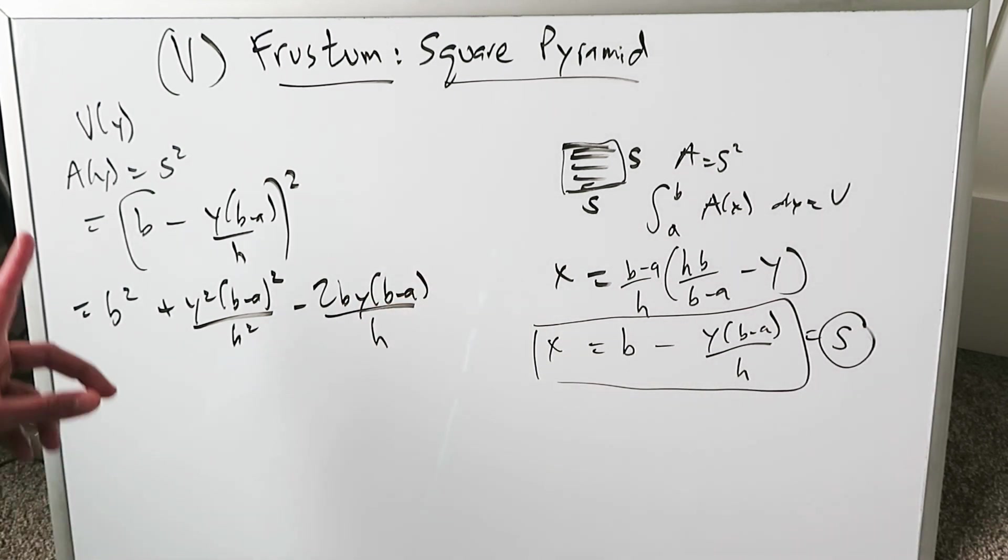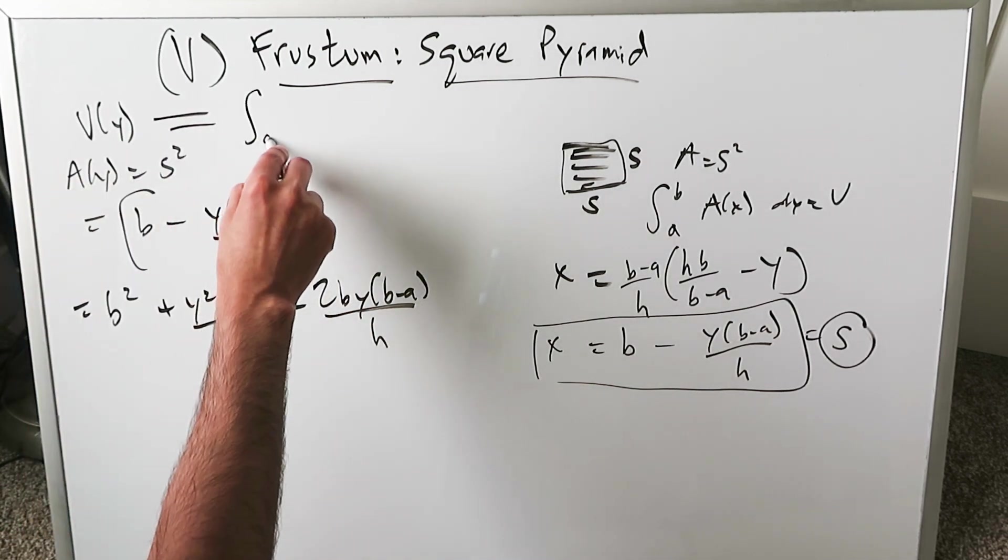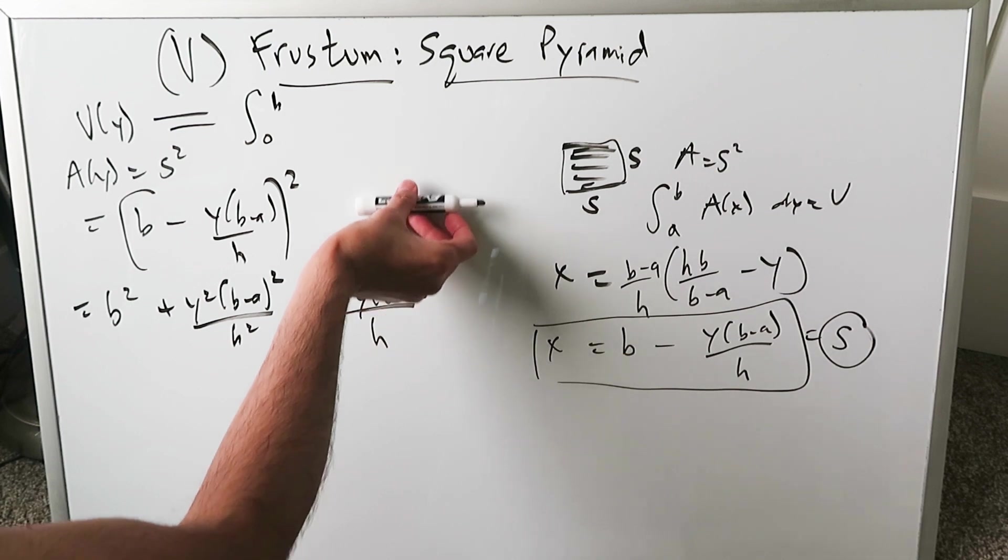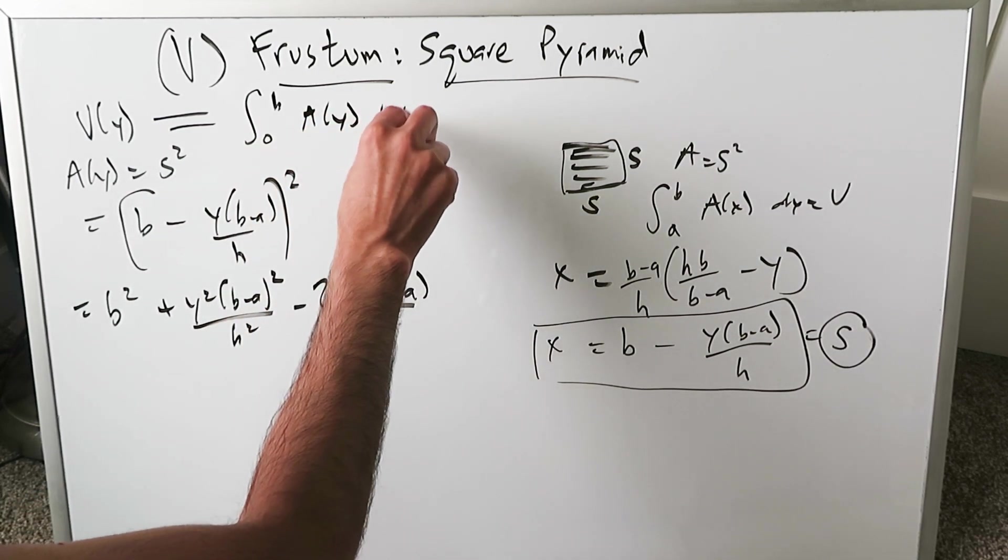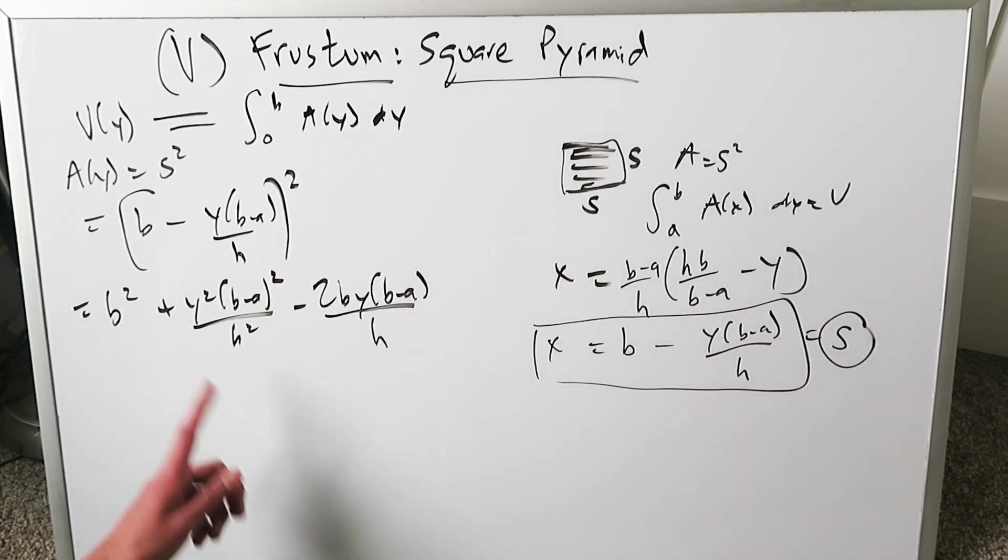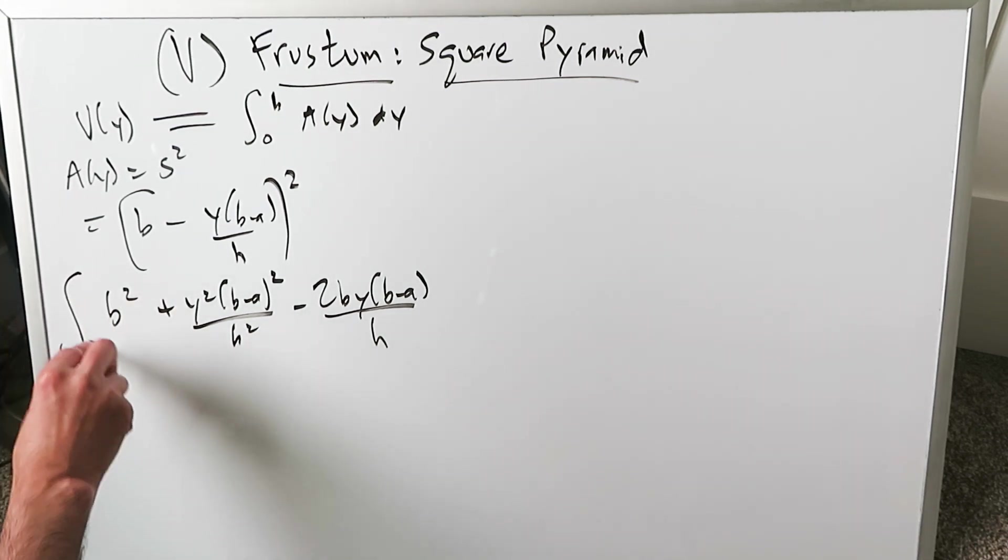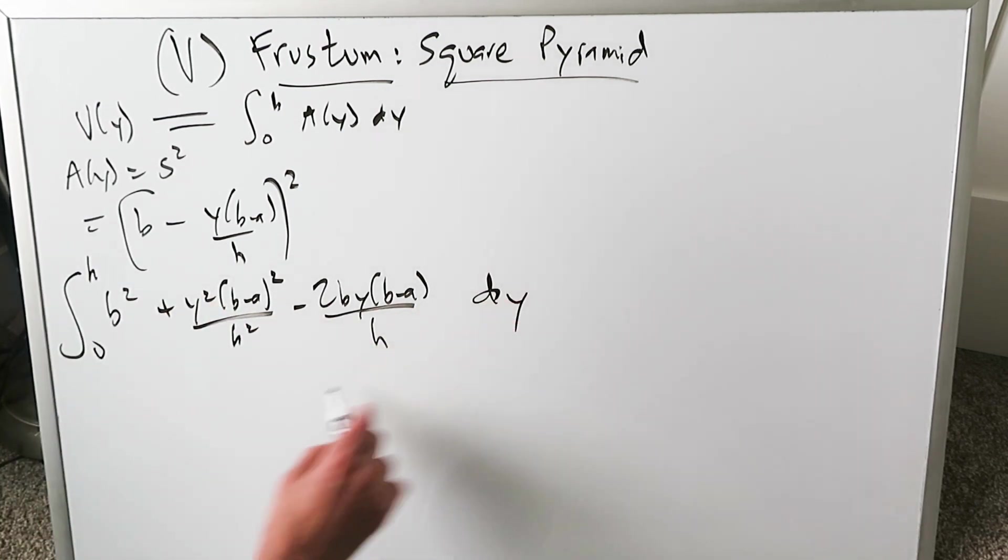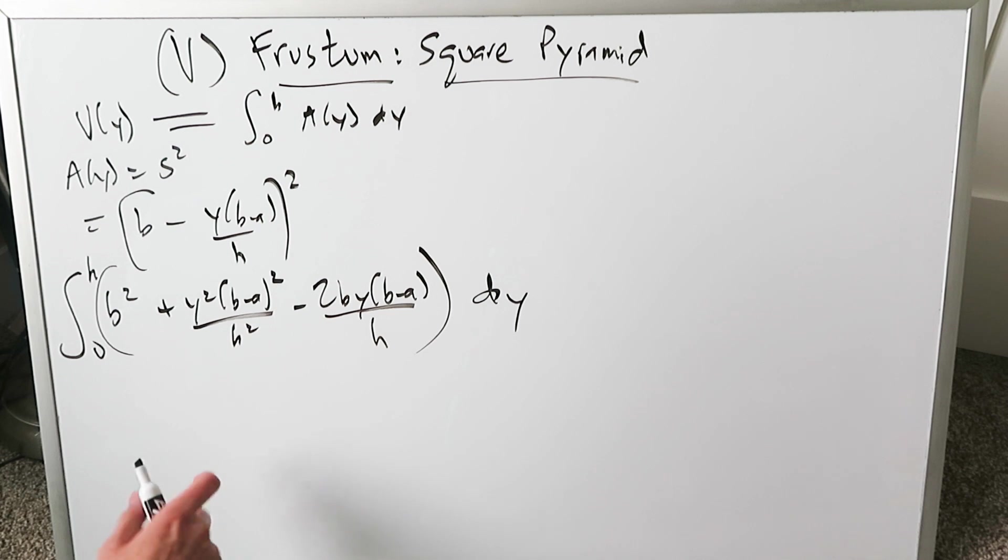This represents area with respect to Y. What's my actual volume integral? Going from lower limit to upper limit, I'm calling the height of that frustum H, and then you're doing area with respect to Y, dY. You're integrating the cross-sectional slices. We're going to integrate this across that limit 0 to H. This represents the integral.